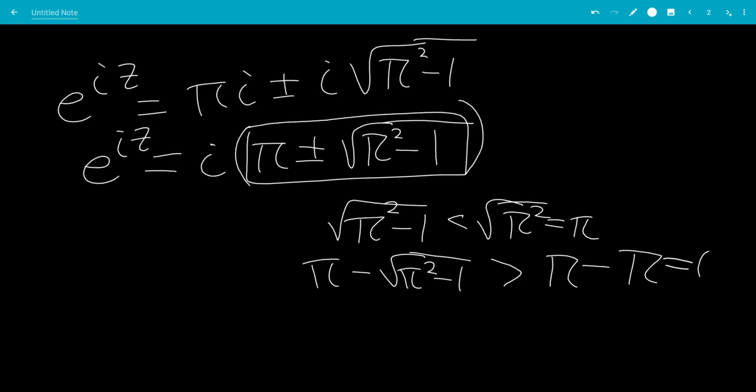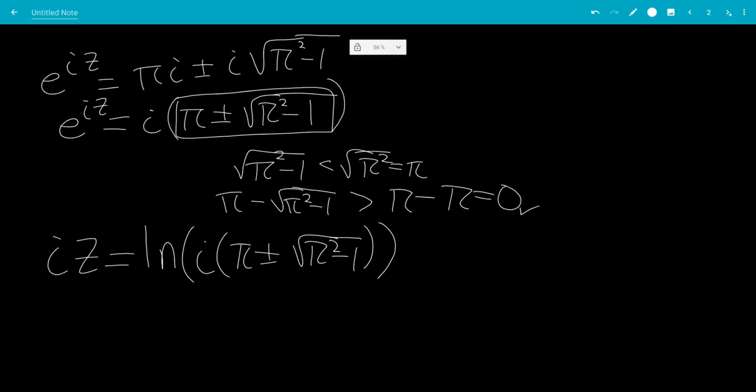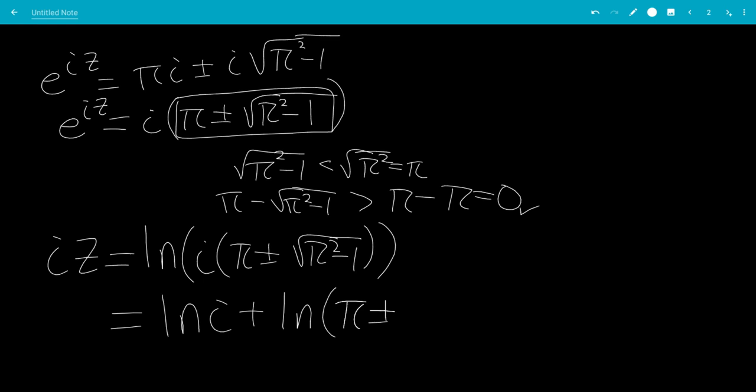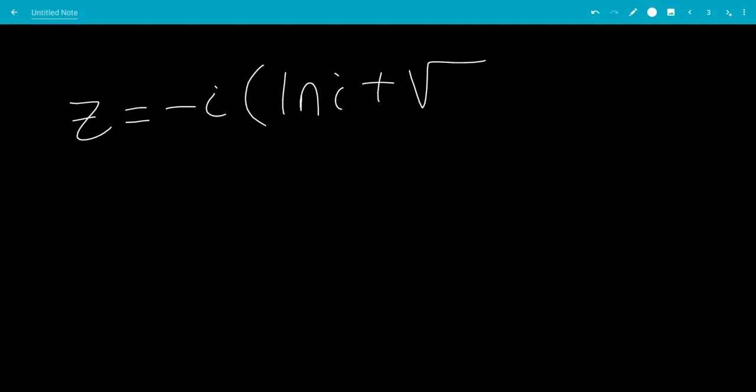So we are allowed to take the natural log of both sides. So iz equals the natural log of i times pi plus or minus square root of pi squared minus 1. And we can separate these: ln(i) plus ln of pi plus or minus square root of pi squared minus 1.